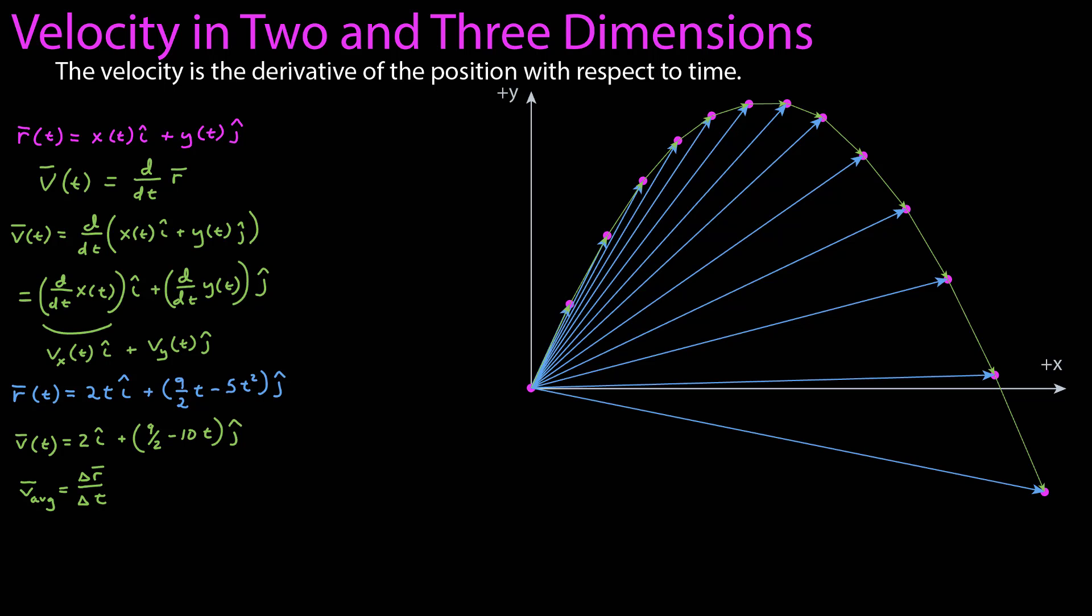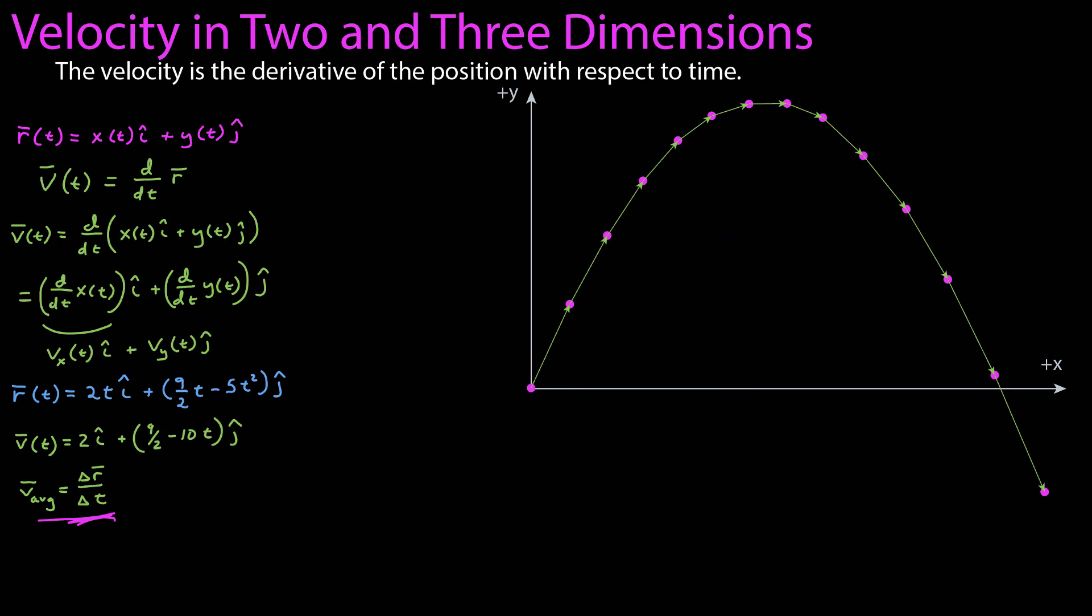The displacement between two points in time is related to the average velocity. The average velocity is just that displacement divided by the time interval. Here I've drawn each displacement between each two points in time. And that displacement can also represent the average velocity because they're simply proportional to each other. So now we can see how the velocity is changing.